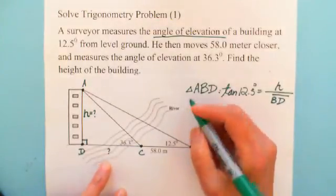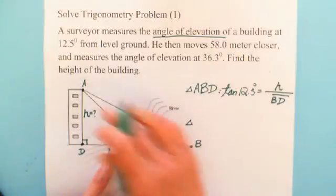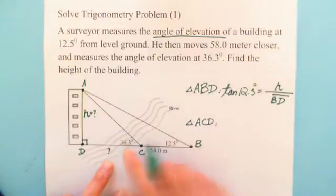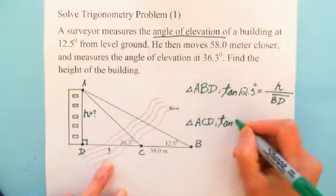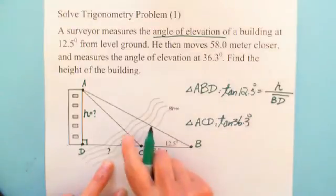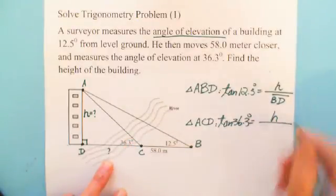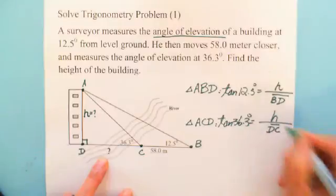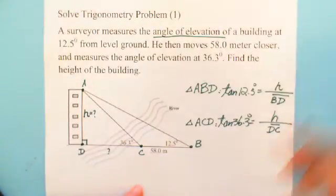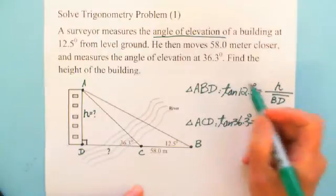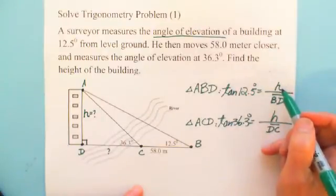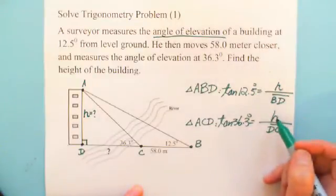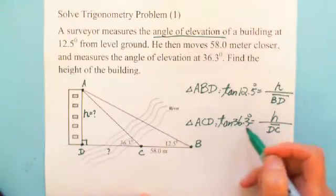Then in triangle ACD, the tangent 36.3 degrees equals the opposite side, which is H over DC.